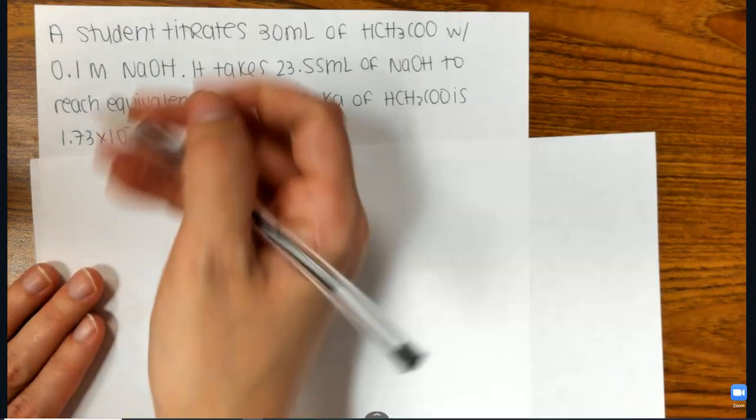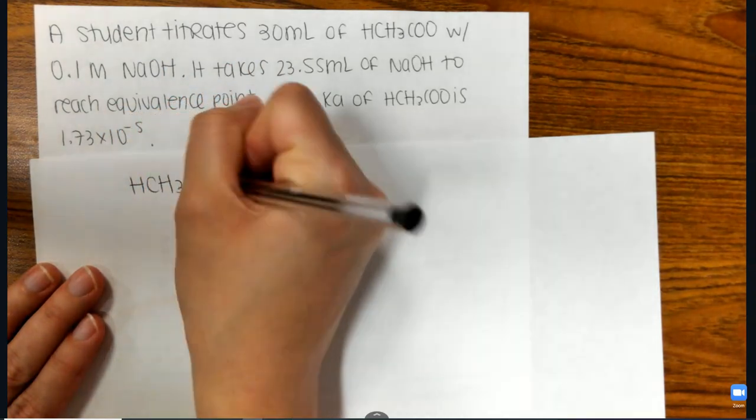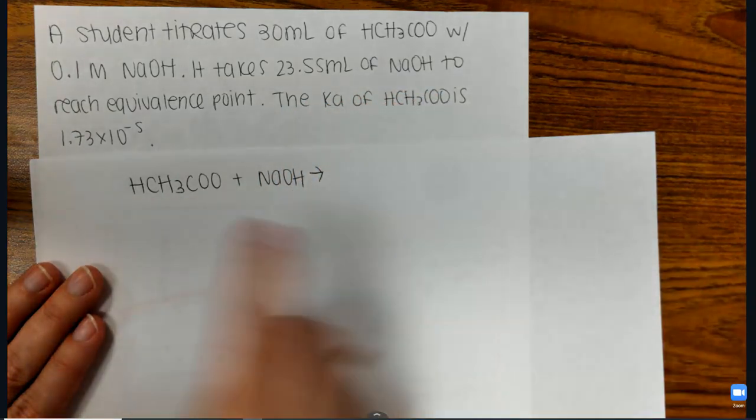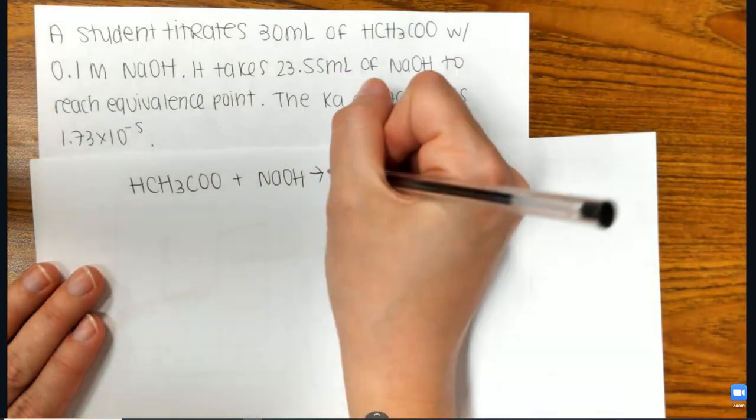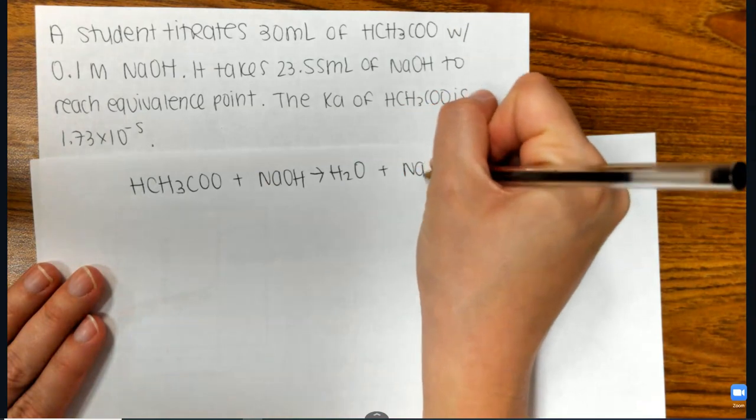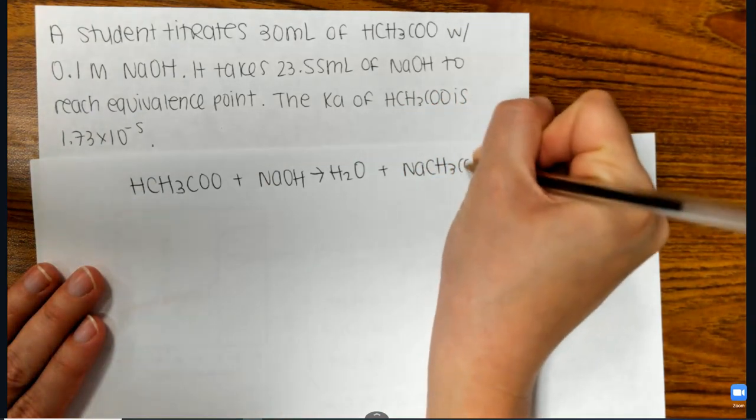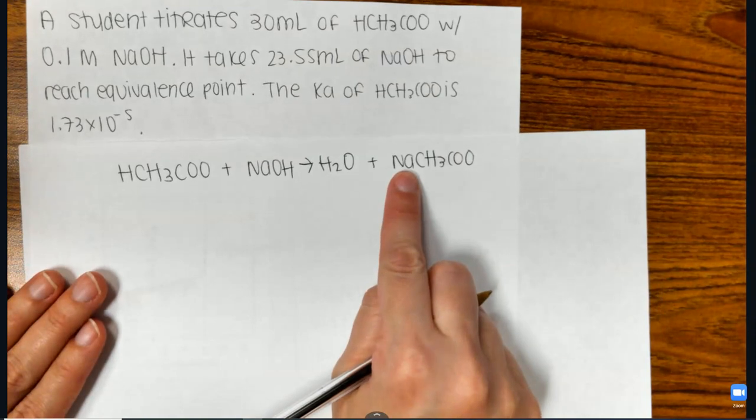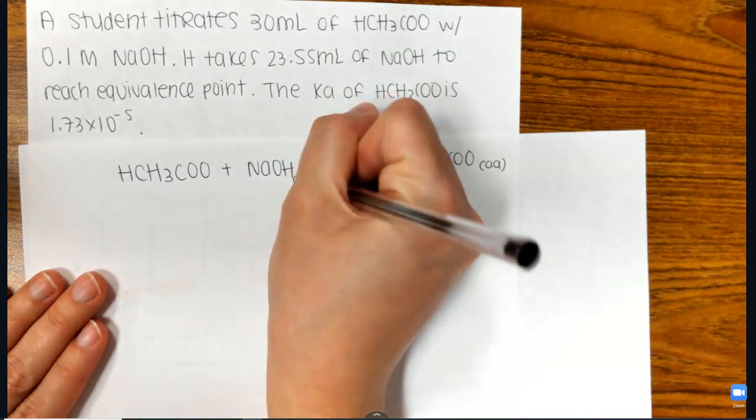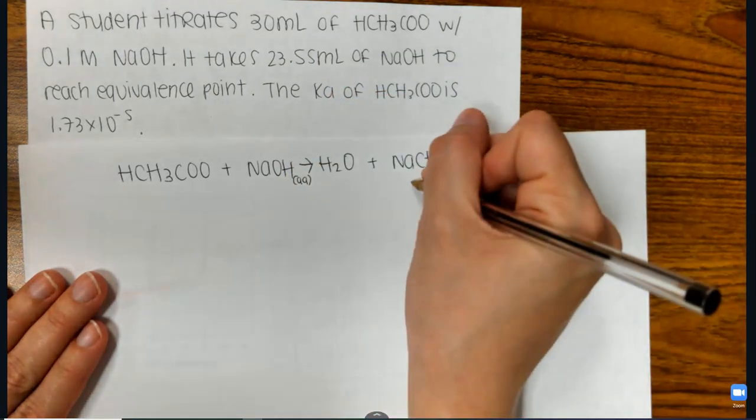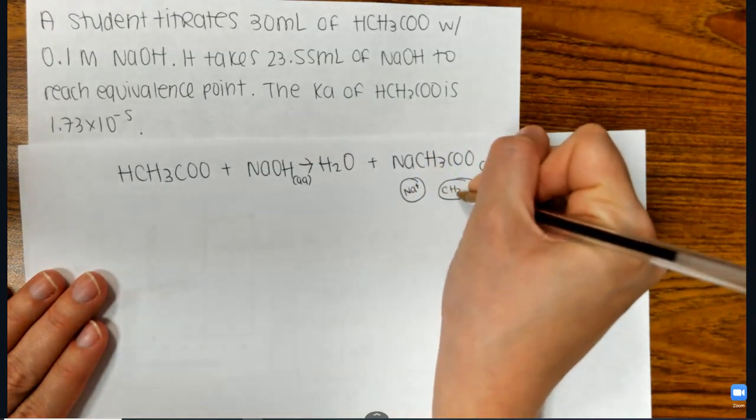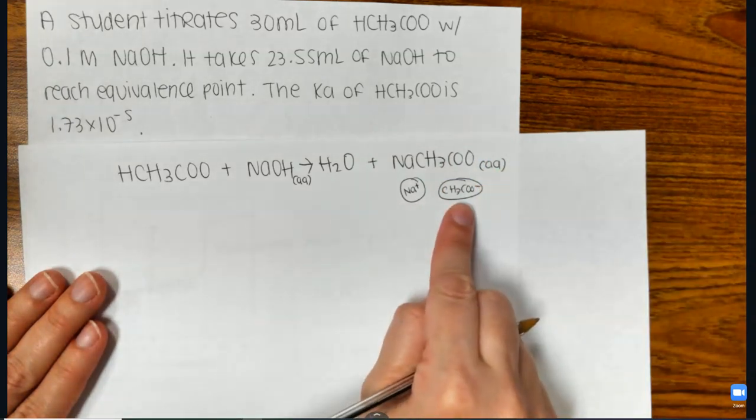The first thing I want to do is write the equation. So acetic acid plus sodium hydroxide. That is going to make water. H goes with OH. And then it's going to make sodium acetate. Na goes with the acetate ion. Now you should know that anything that has sodium is aqueous. So that's aqueous. This is aqueous because it's a strong base. And so what does it mean that it's aqueous? It means that those ions are separate.